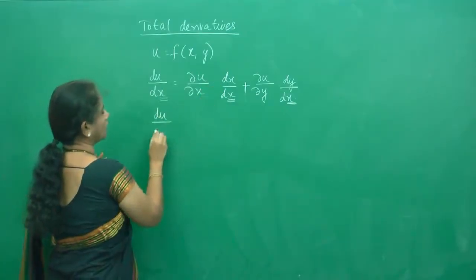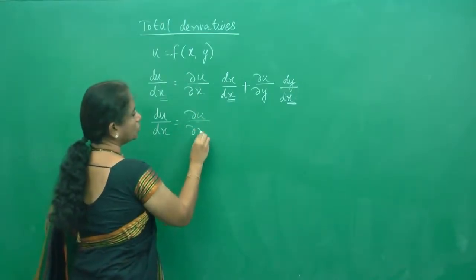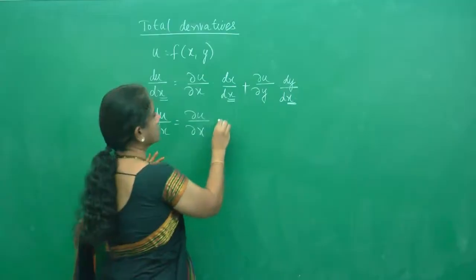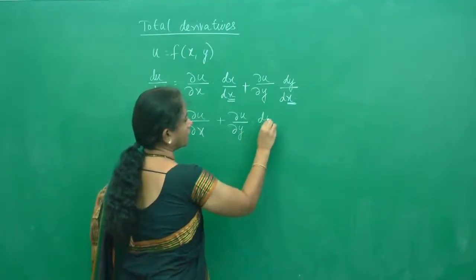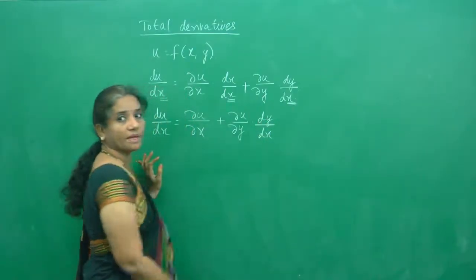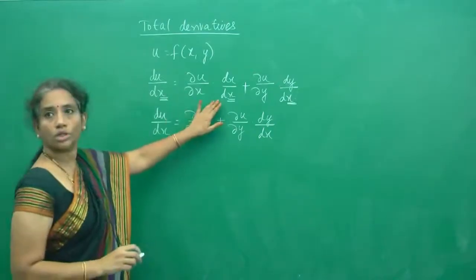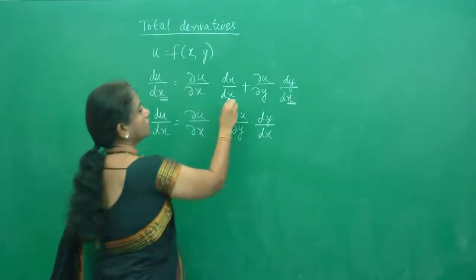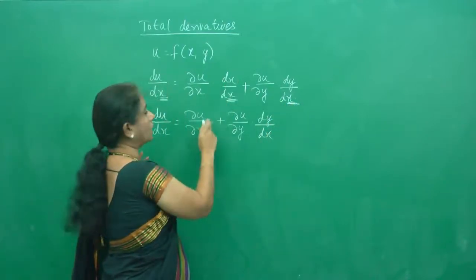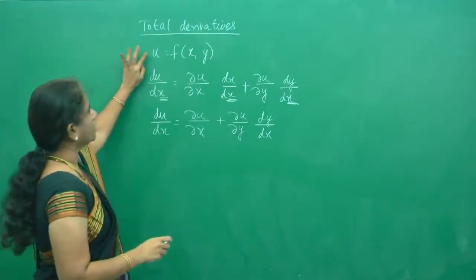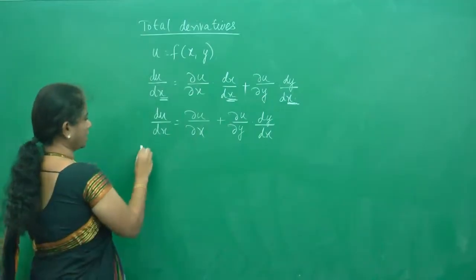When you want to use it as a formula: du by dx is nothing but differentiate u partially with respect to x, plus differentiate u partially with respect to y, and total differentiation of y with respect to x. This is for differentiation with respect to x. When you do the total derivative, all the derivatives should be with respect to x. Because dx by dx is 1, we don't write that separately. This is the concept of total derivatives — we will do one example.